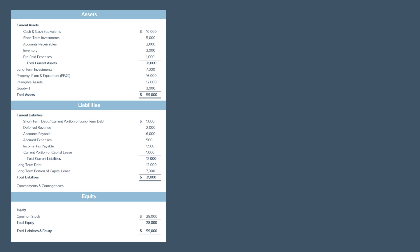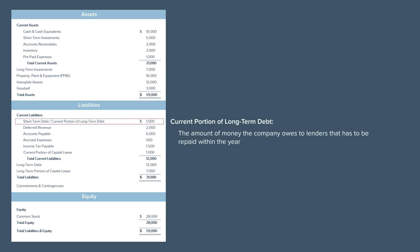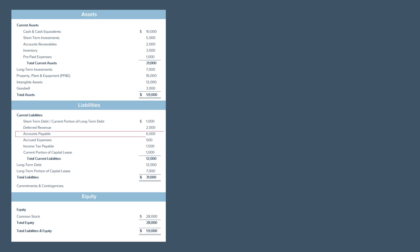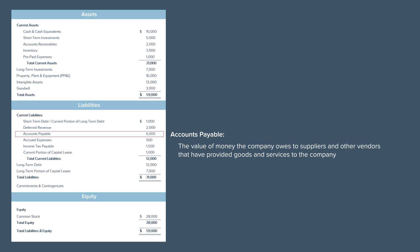By the way, if you want to learn more about finance, accounting, and investing, you should check out the online courses on our website — link is in the description. Now let's talk about the common items under liabilities. First on this list is usually current portion of long-term debt. This is the amount of money the company owes to lenders that has to be repaid within the year. The company may have borrowed a lot more in total, but only has to repay a portion of it within one year — therefore it's called current portion of long-term debt. Deferred revenue is the value of goods and services that the company owes to its customers. The customers have already paid the company in advance, but the company has not yet delivered what the customers had purchased. Accounts payable represents the value of money the company owes to suppliers and other vendors that have provided goods and services to the company. Said differently, the company had purchased things from other companies but not yet paid for them.